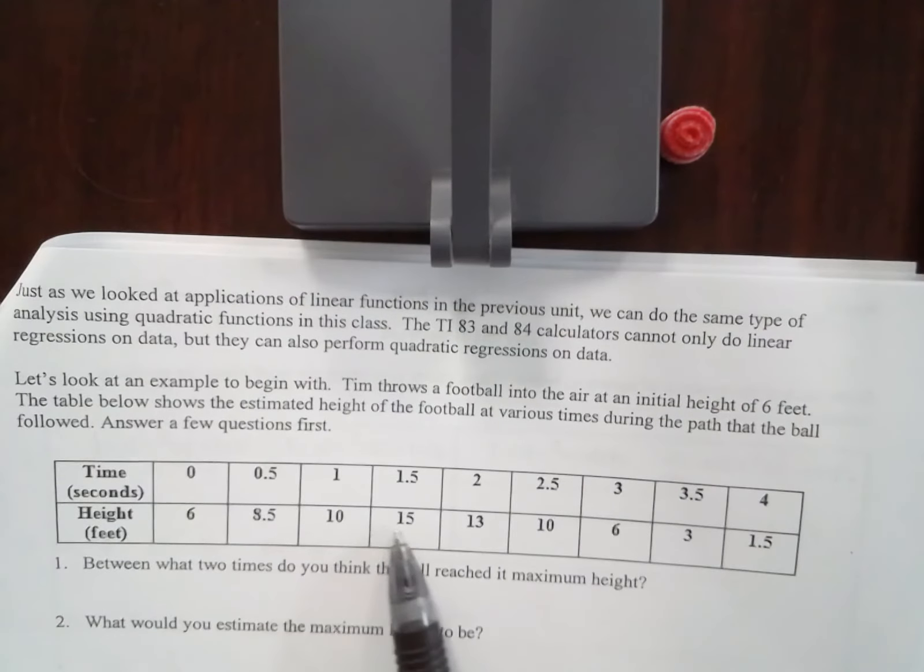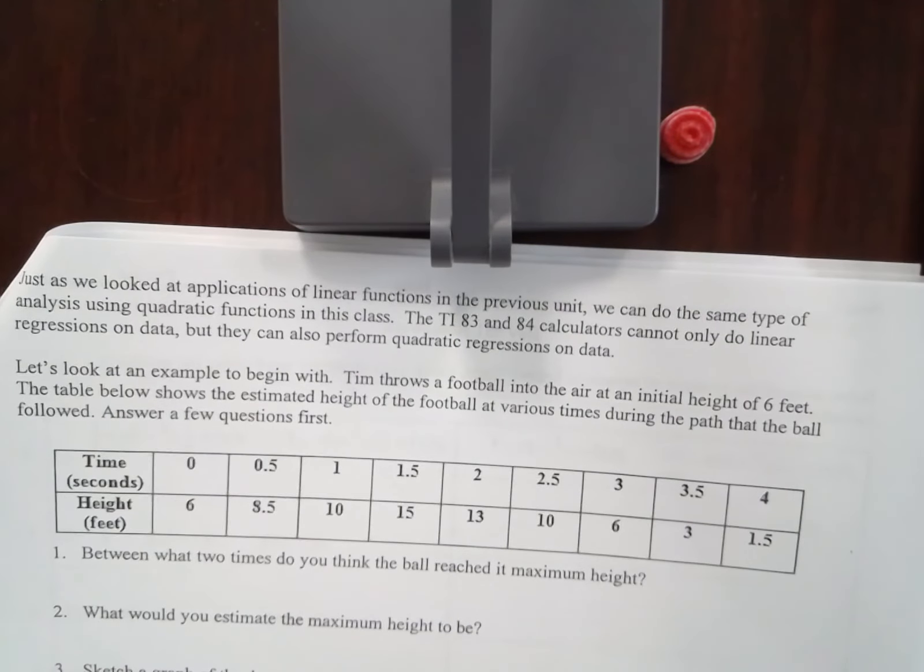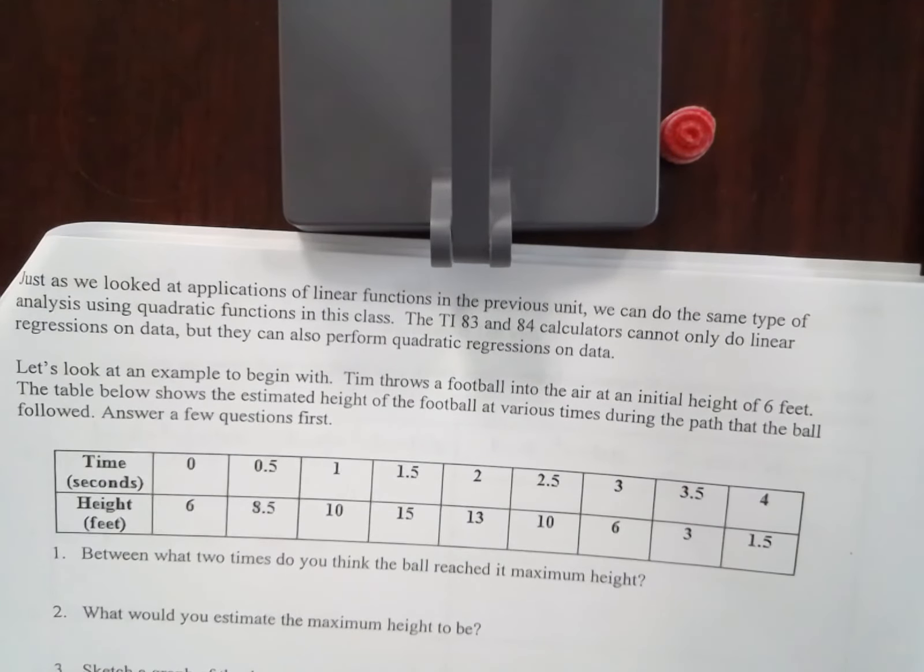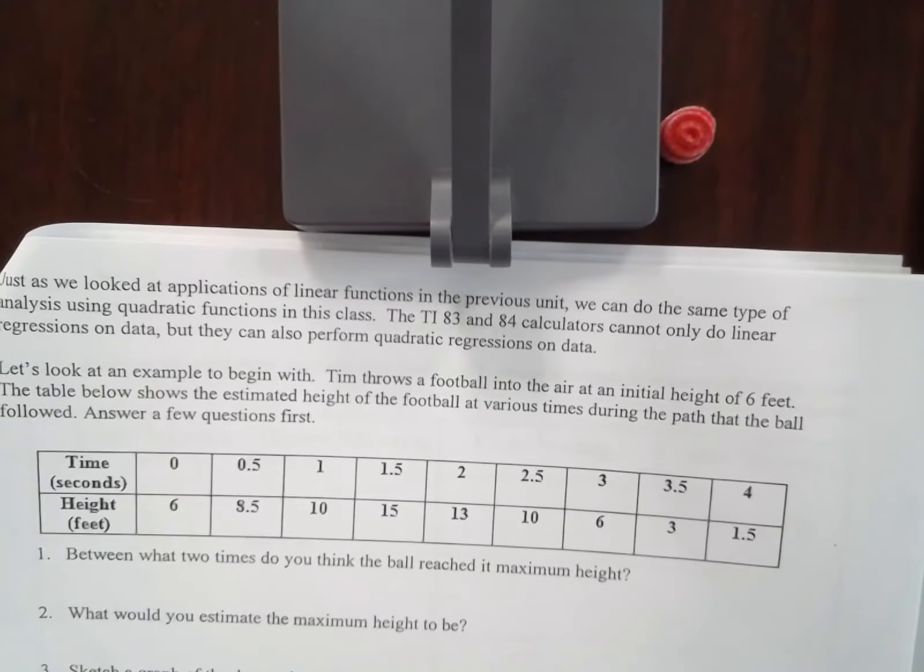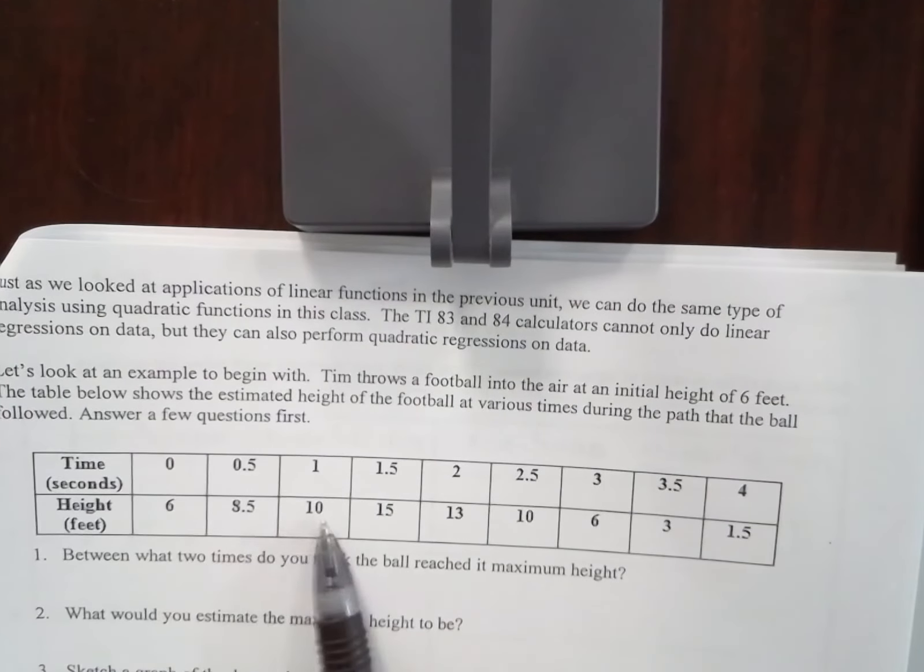Tim throws a football into the air at an initial height of 6 feet. The table below shows the estimated height of the football at various times during the path the ball followed. Answer a few questions first. So we're going to do 1 through 5 here. Between what times do you think the ball reached its maximum height?